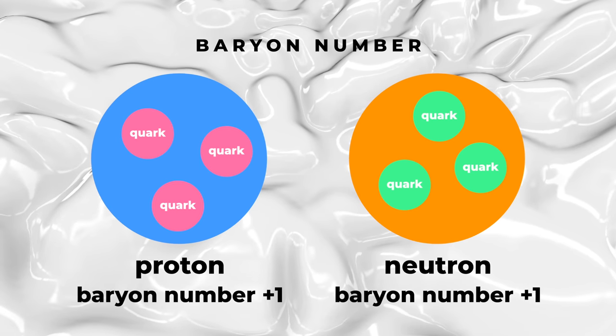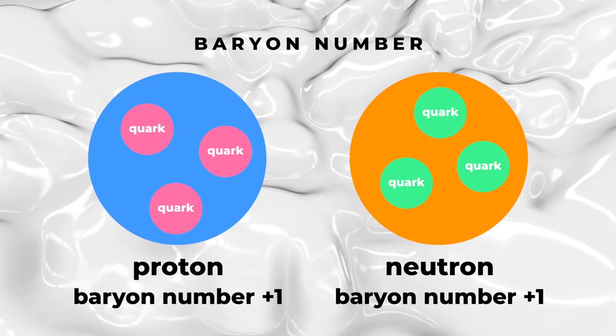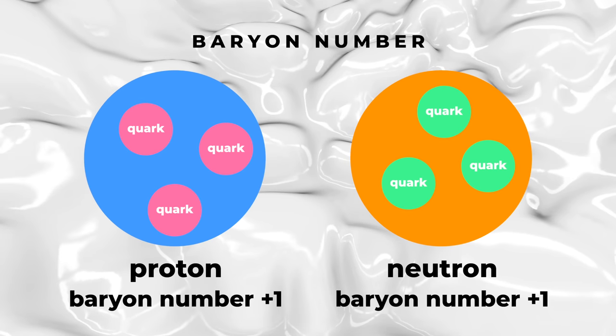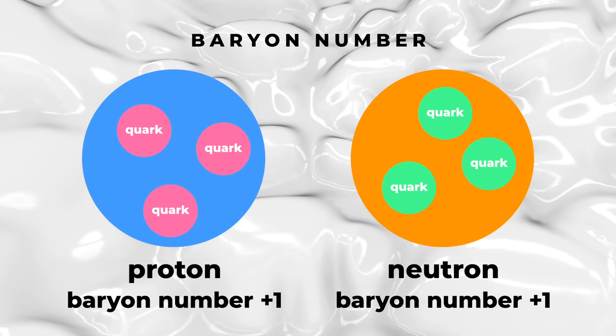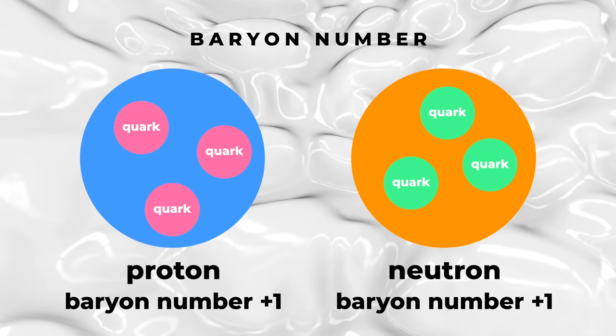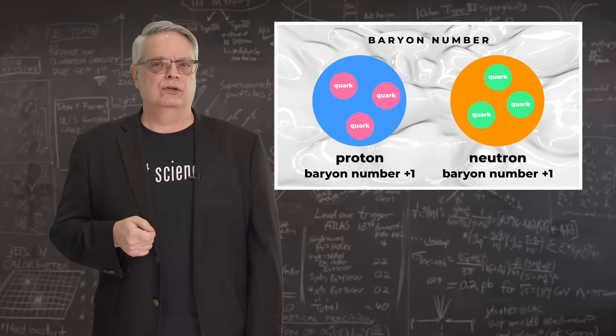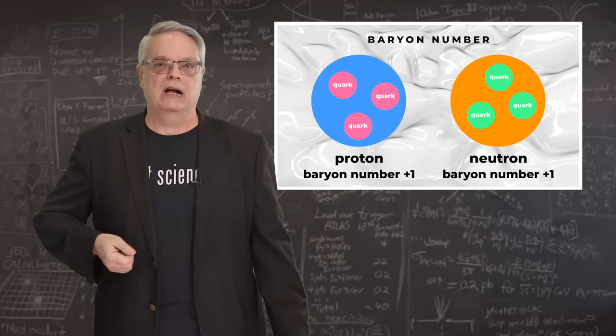Baryon number is much less familiar. Baryons are particles consisting of three quarks. Quarks are one of the smallest known building blocks of matter, and protons and neutrons each contain three quarks each. Thus, protons and neutrons are both baryons, but there are many kinds of baryons.